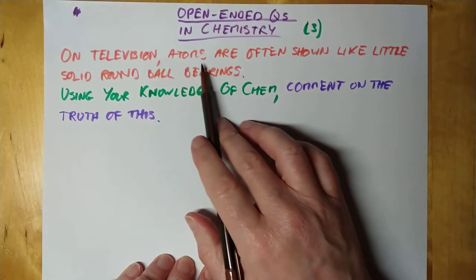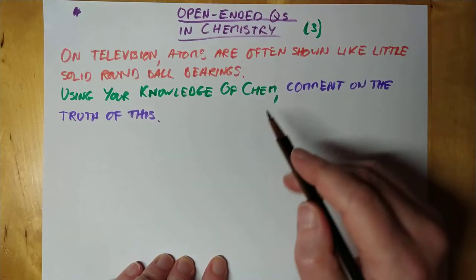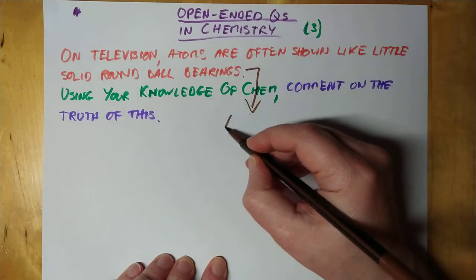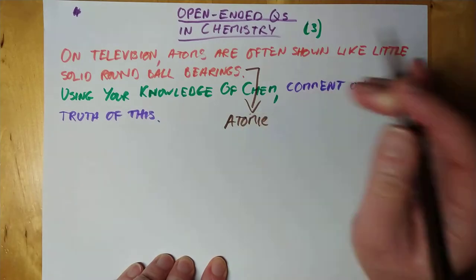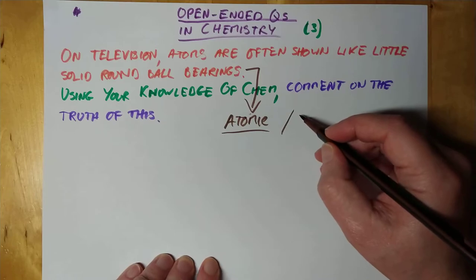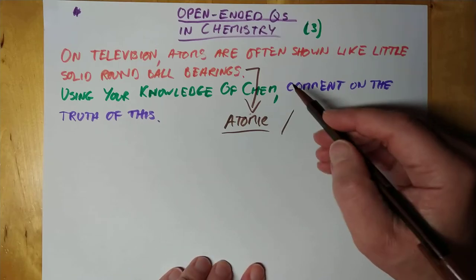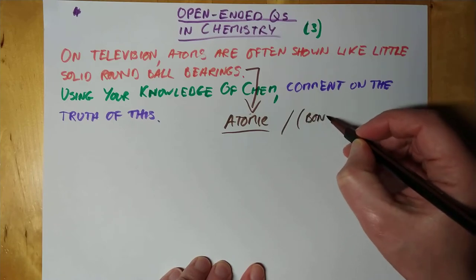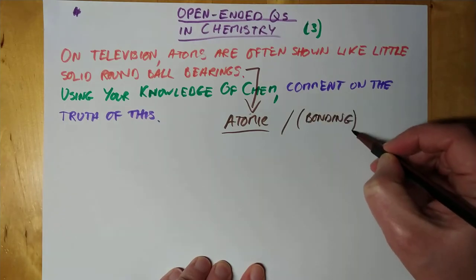Now, I've said here, atoms are often shown like little round ball bearings. That means, I'm hoping, you would see that which area of the course is this? We're talking about atomic structure. Definitely talking about atomic structure. Possibly bonding, believe it or not. Although you're on shaky grounds there, because it mentions atoms here, it doesn't mention any bonding. So we'll probably leave bonding out of it. That's like covalent and ionic and so on. But let's definitely have a look at atomic structure.